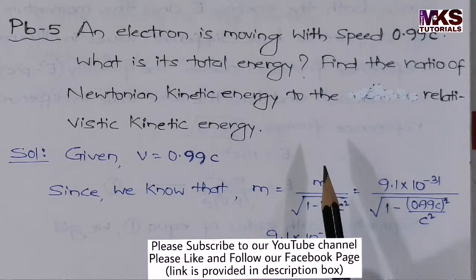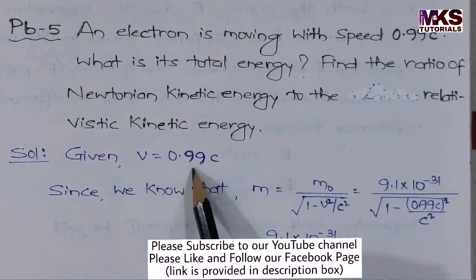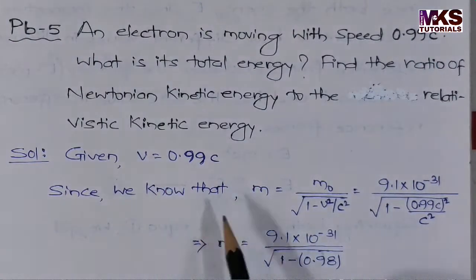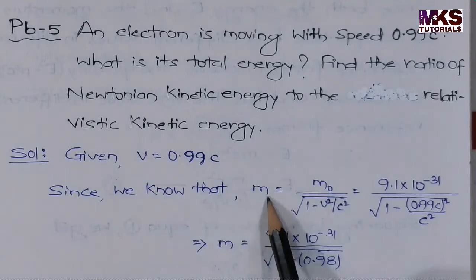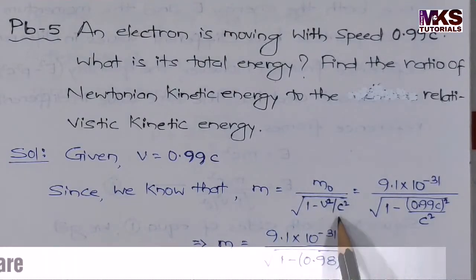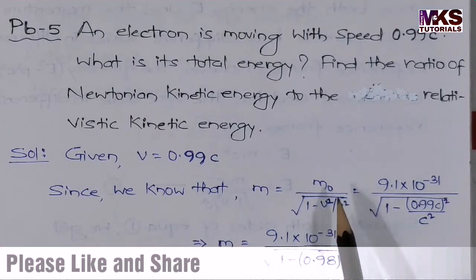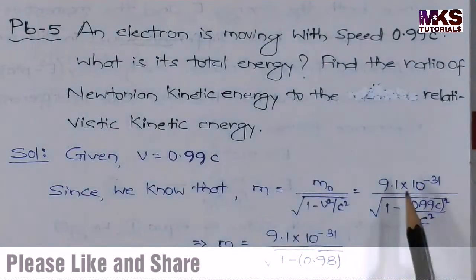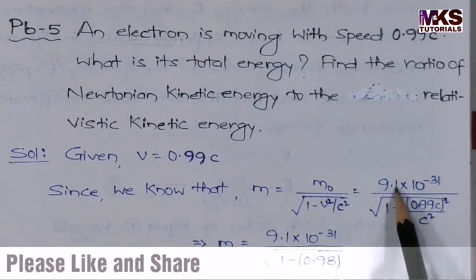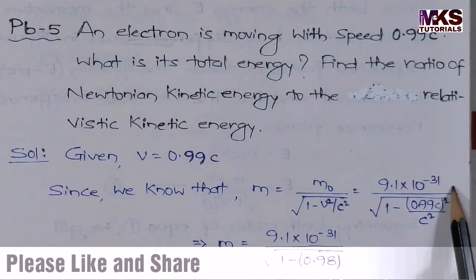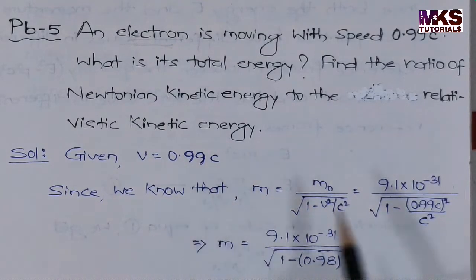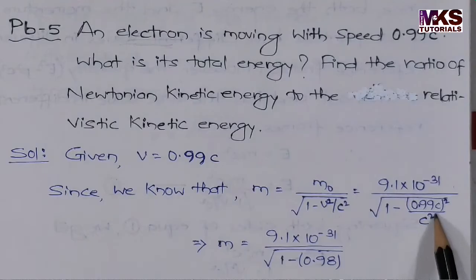So, in the question, what is given? The velocity is 0.99c. We know that relativistic mass m equals m₀ divided by the square root of (1 - v²/c²). Here the rest mass m₀ is 9.1 × 10⁻³¹ kg. We substitute v = 0.99c so that c² will cancel.